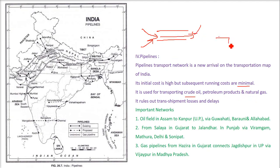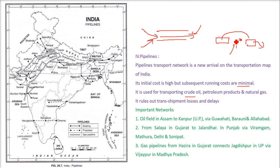When goods travel by train and then transfer to a truck to reach the final destination, there are always trans-shipment losses and delays involved. With pipelines, we don't encounter any such losses — or only very minimal losses and delays.